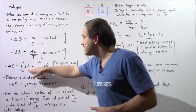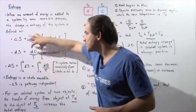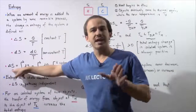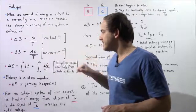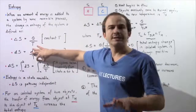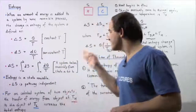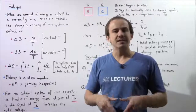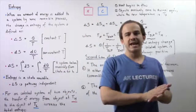Because dS is equal to this ratio, we can replace dS with this ratio. And we see that ΔS is equal to the integral of dQ divided by T taken from A to B. This is our change in entropy for a system taken by a reversible process from some state A to some state B.